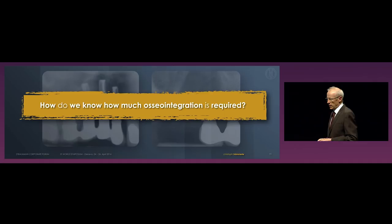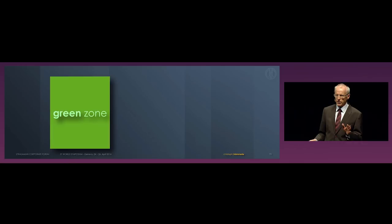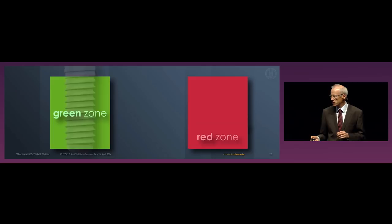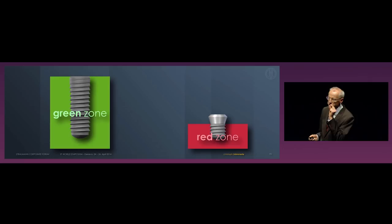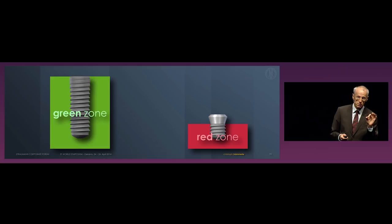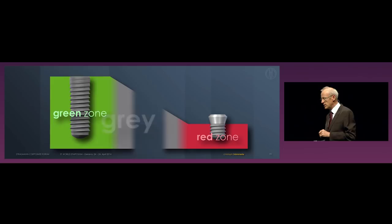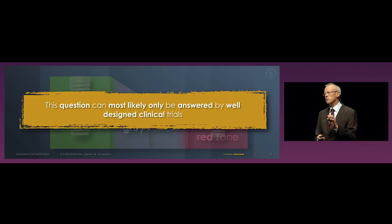This did not really help to tell us how much osseointegration is required. I think there is a green zone and there is a red zone. In the green zone, we know we have enough osseointegration to support the loading forces. In the red zone, we may have just one trabeculum left attached to an implant — and by definition it is an osseointegrated implant, but the first time I bite together, this trabeculum will break. What we are interested in is the gray zone in between, and I think this question can only be answered with well-designed clinical studies.